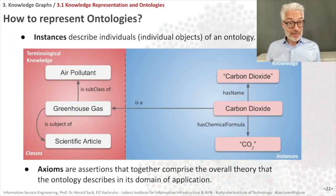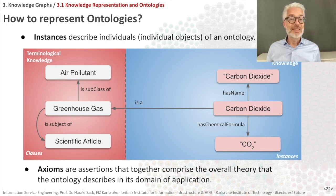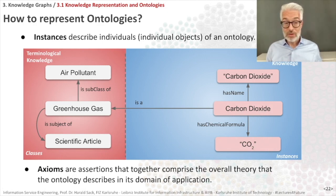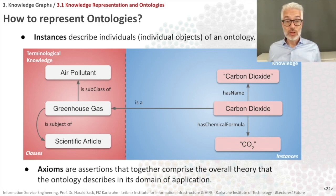Instances describe individuals or the individual objects of an ontology. For example, I can define carbon dioxide to be a greenhouse gas; carbon dioxide has a name and a chemical formula CO2. A greenhouse gas is a subclass of air pollutant and might be the subject of a scientific article. The part of the ontology concerned with classes and relations among classes is the terminological knowledge — the T-box. The part focused on particulars, meaning individuals and individual facts, is the assertional knowledge — the A-box.